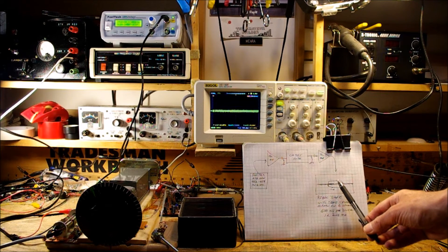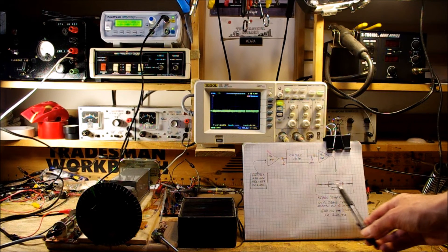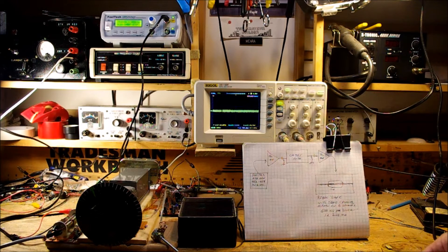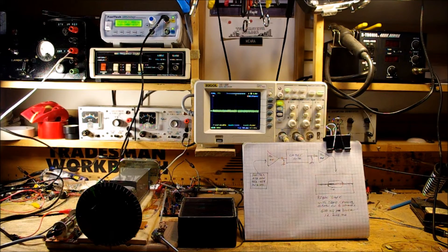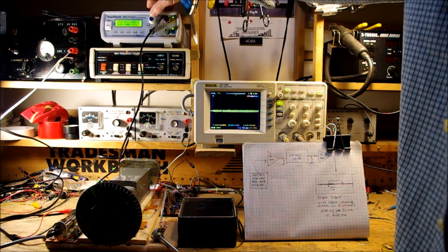It should enable us to tell whether there's a lot of ripple in the passband and it should tell us whether the passband is the width that we are hoping for, in this case about 2.4 kilohertz. So let me get the signal generator going here.